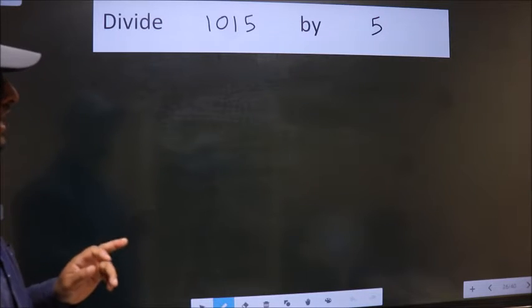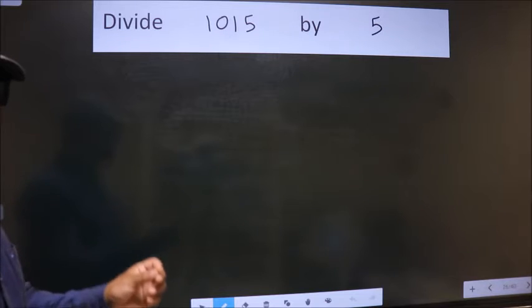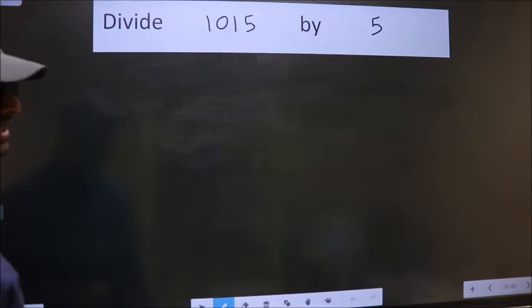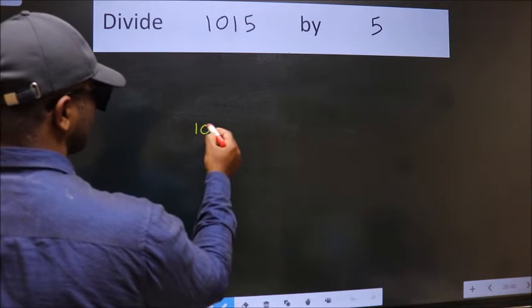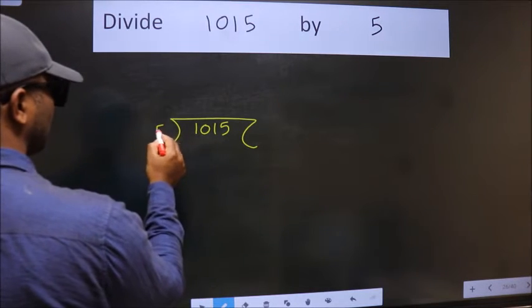Divide 1015 by 5. To do this division, we should frame it in this way: 1015 here, 5 here.